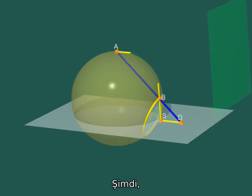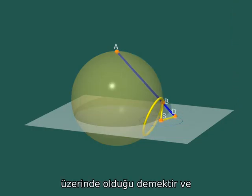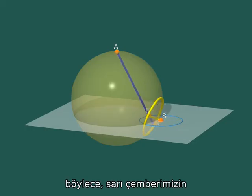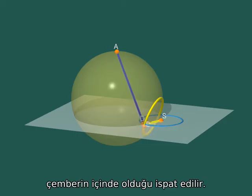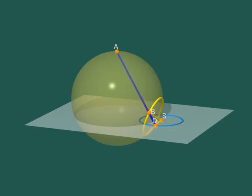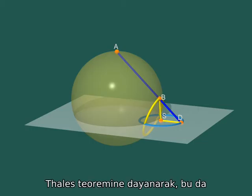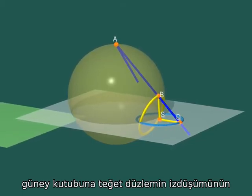Let's see. Saying that D-S has a constant length means precisely that D describes a circle with centre S. So that the projection of our yellow circle on the horizontal plane through S is contained in a circle. We have seen that, by Thales' theorem, this implies that the projection onto the tangent plane to the south pole is also contained in a circle.